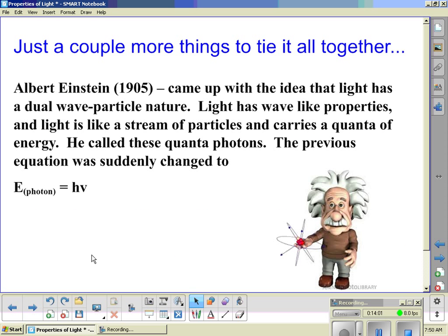We're getting close to done here. Just a couple more things to tie it all together. We've got Einstein, he's back again. He took some of Planck's findings and his photoelectric effect and tried to put an end to this dilemma of light as a wave or light as a particle, and he came up with the idea that light has a dual wave-particle nature. Light does have wave-like properties, and light is like a stream of particles and carries quanta, or little packets of energy. He called these quanta photons. The previous equation was suddenly changed to the energy of a photon is equal to Planck's constant times frequency.